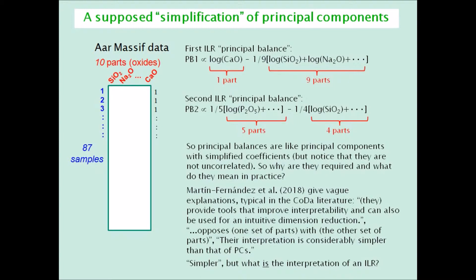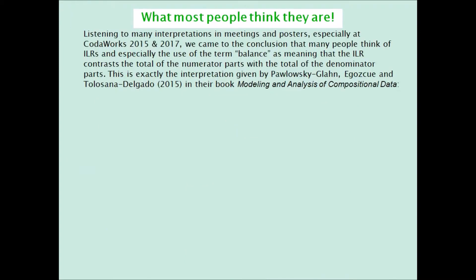The fact is that the interpretation of an ILR is very complicated. Listening to many talks at recent conferences on compositional data analysis and questioning presenters of posters who use ILRs, we've come to the conclusion that most people interpret an ILR — and especially when it is called a balance — as a contrast between the total or average of the numerator parts and the respective total or average of the denominator parts.